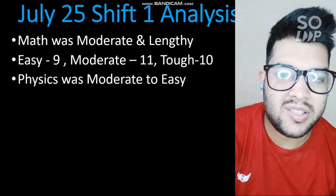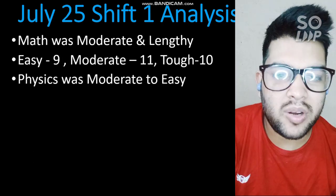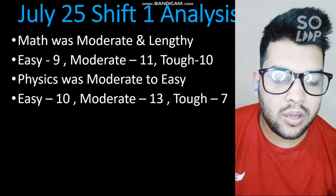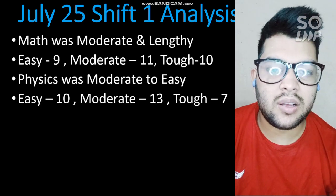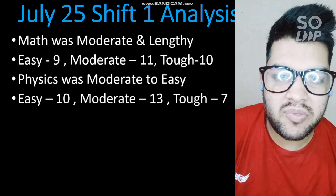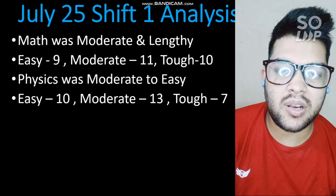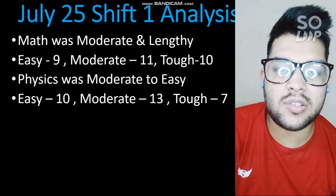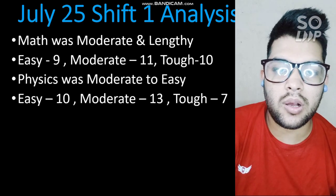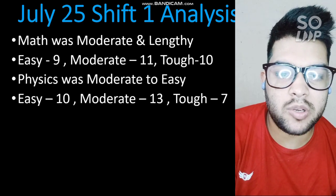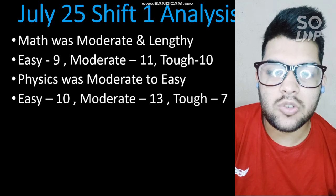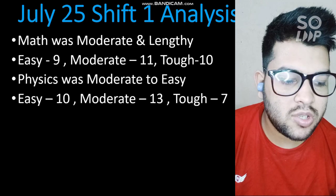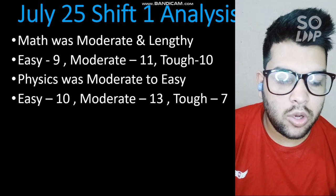Physics was moderate to easy this time — earlier it was moderate, but in today's paper it was moderate to easy. The number of easy questions was 10, from Modern Physics. If your shift is next or you are targeting the next phase, I would suggest covering Modern Physics because it requires very less time and is very scoring. You will get 5 to 6 questions from Modern Physics in each shift. Moderate questions were 13 and tough were 7.